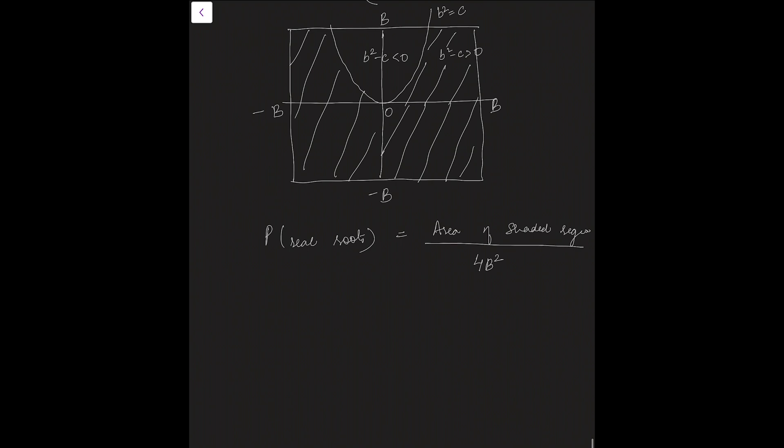Now, it is hard to find the area of the shaded region. So, we will calculate the area of unshaded region using the integration two times the area of the small region that is integration of root c dc c varying from 0 to capital B.